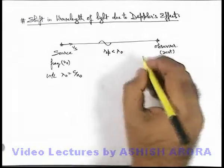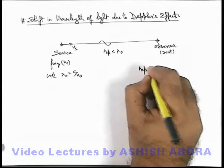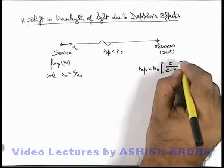Now in this situation if we talk about the apparent frequency, we can simply write apparent frequency received by the observer will be n knot c by c minus v s.